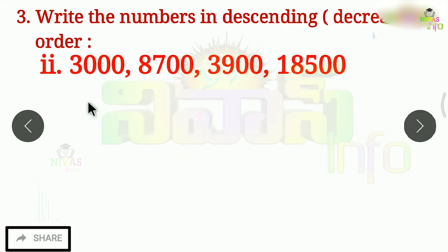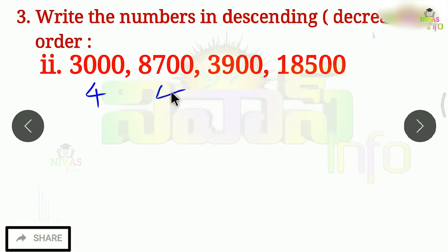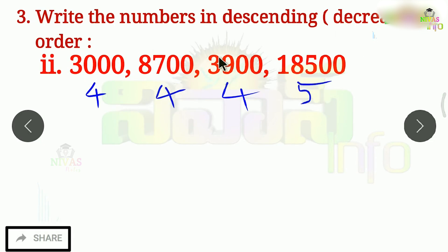We will find out the next problem. In the first number, we will find out the big number because we are finding the descending order. The first number has 4 digits, the next also has 4 digits, and the next also has 4 digits. If we consider the 4-digit numbers, we will be able to get the first big number.